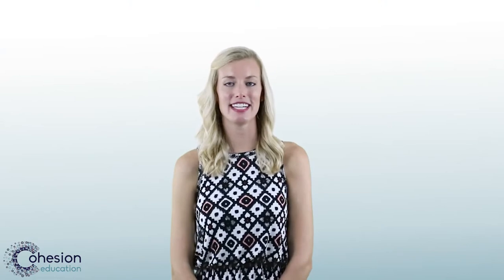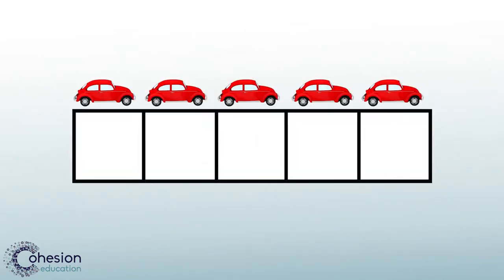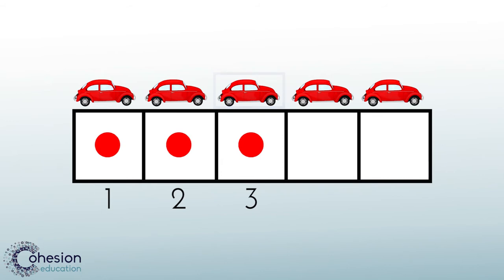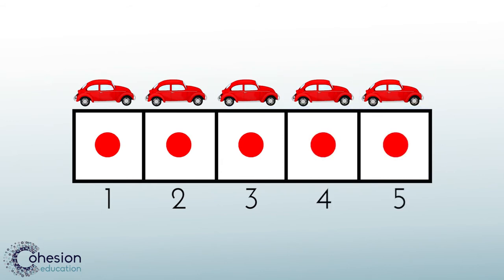Let's take a look at how to model and count the number 5. Count the cars and draw the counters in the 5 frame to show the number. Here is a group of 5 cars. As students can see, the number 5 is full of counters. Using a 5 frame will help students to see what the number 5 looks like.